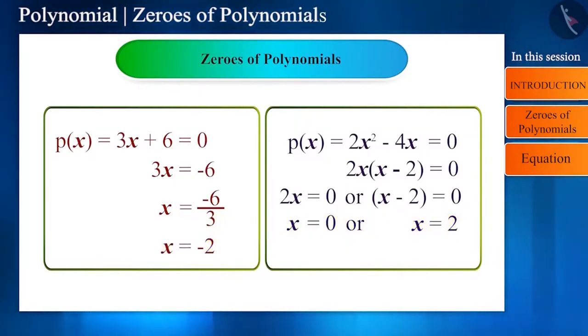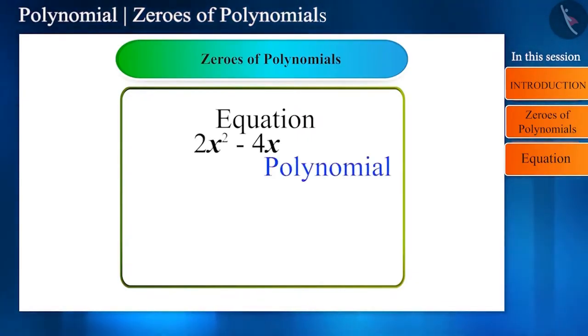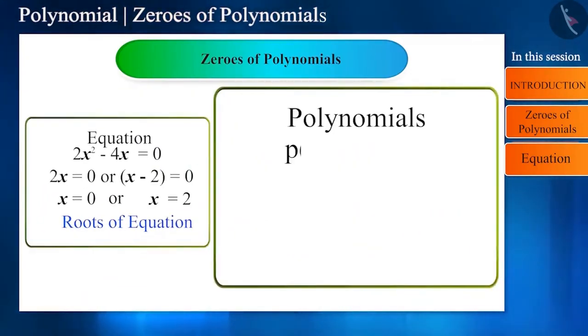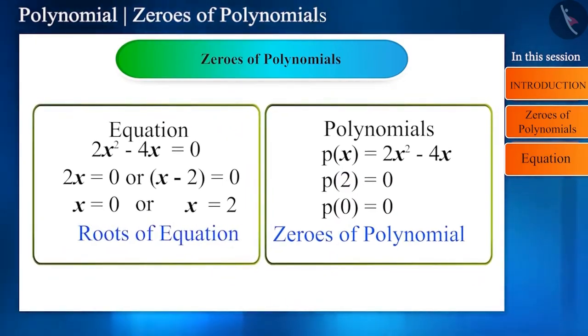And now, the last few points that you should take care of. By equating the polynomial to 0, it becomes an equation such that 2x² - 4x is a polynomial, and 2x² - 4x = 0 is an equation. On solving this, we get the roots of the equation. Here, 0 and 2 are the roots of the equation. And numbers that make the value of the polynomial 0 are called zeros of the polynomial. The numbers are the same. Their names change according to the polynomial and the equation.